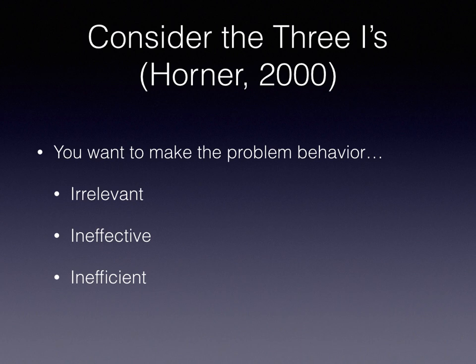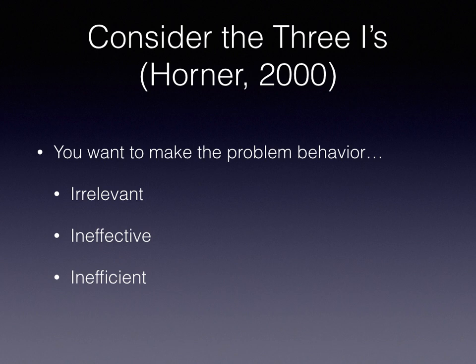You can make a problem behavior ineffective by making sure it no longer works. If a child cries and the teacher comes over and provides assistance, that makes crying work for the student. To make it ineffective, stop delivering the consequence that was maintaining it. However, you then need to teach the child a more desirable behavior and reinforce that, making the problem behavior inefficient. Crying would be much more inefficient than raising a hand and asking for help — you can get help much more quickly that way.